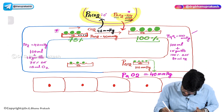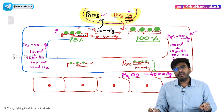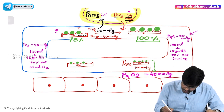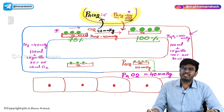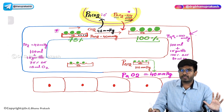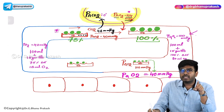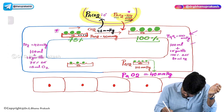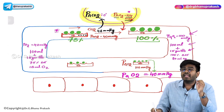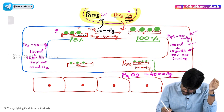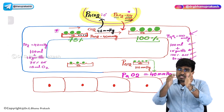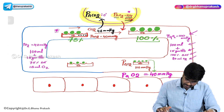Let's have a summary. In the arterial blood, the partial pressure of oxygen is now 100 mmHg — actually 95 to 97 mmHg, but take it as 100 mmHg in round figures. In 100 ml of blood, there is 15 grams of hemoglobin, and this 15 grams of hemoglobin is carrying 20 ml of oxygen, with hemoglobin 100 percent saturated. This is what's happening on the arterial side.